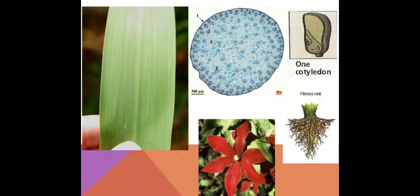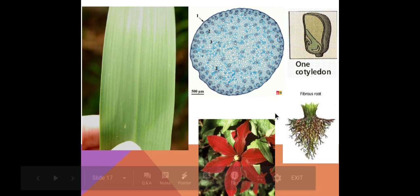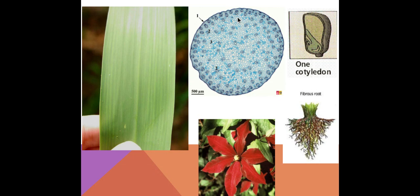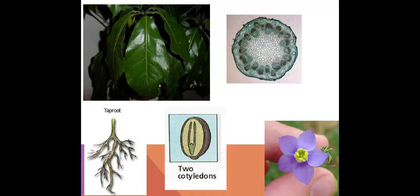Here are some pictures showing what we mean by that table. Our monocot with parallel leaf veins on the far left picture, the messy vascular bundle arrangement in the stem, one seed leaf, fibrous root systems, and if we count the petals it's in multiples of three. Versus our eudicots, where we have broader branching veins in leaves, a nice circular organization in the stem, two seed leaves, a taproot, and petals in multiples of fours and fives.